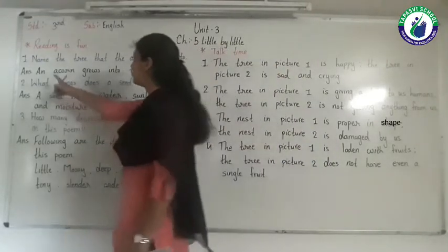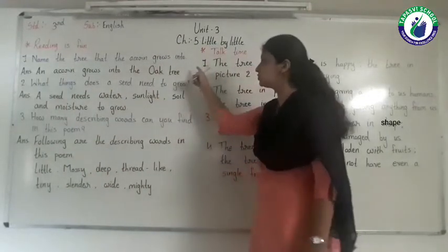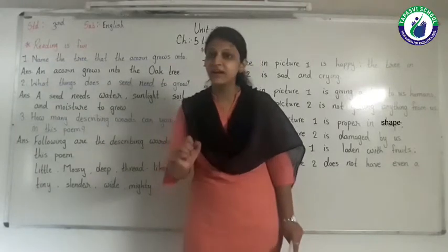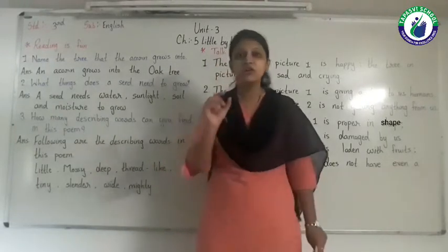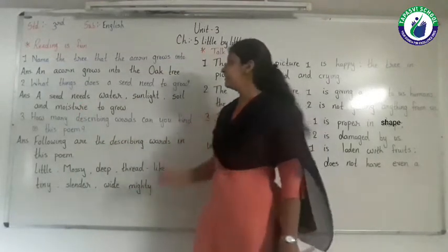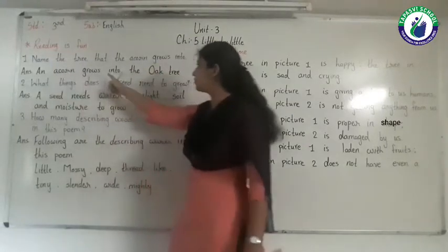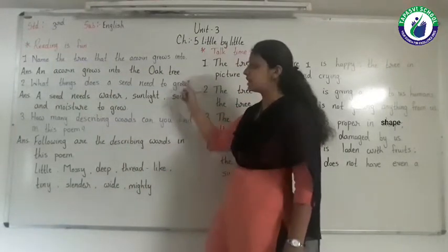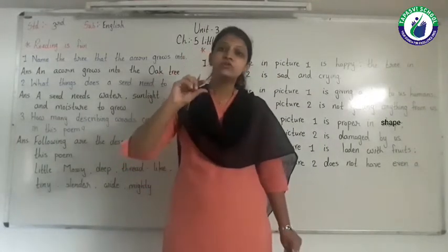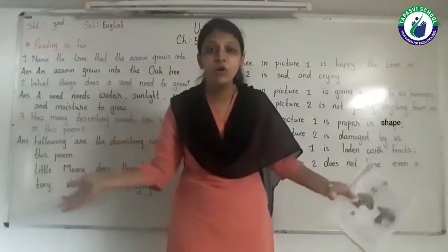Let's see question number 1: Name the tree that the acorn grows into. Here you have to give the name of the tree that the acorn grows into - which is the name of the acorn seeds. The answer is: An acorn grows into the oak tree. Acorn means a small seed of the oak tree, and that small seed grows into a big oak tree.